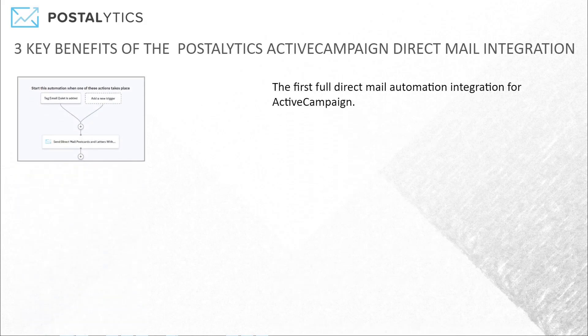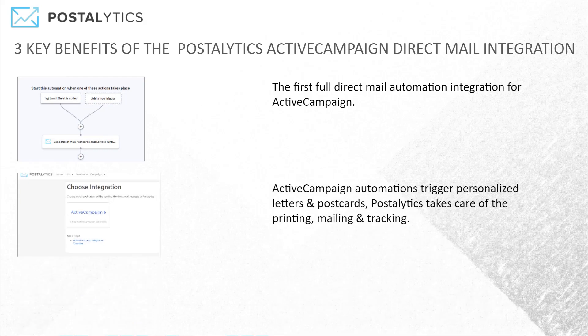This is the first full direct mail automation integration for ActiveCampaign, so you can access it right from your CX apps and have two-way full direct mail campaigns that pull data out of ActiveCampaign and sync back into ActiveCampaign. We're able to leverage the automations you've built, as well as your contact data, and trigger postcards and letters to go out to your contacts for a wide variety of different reasons.